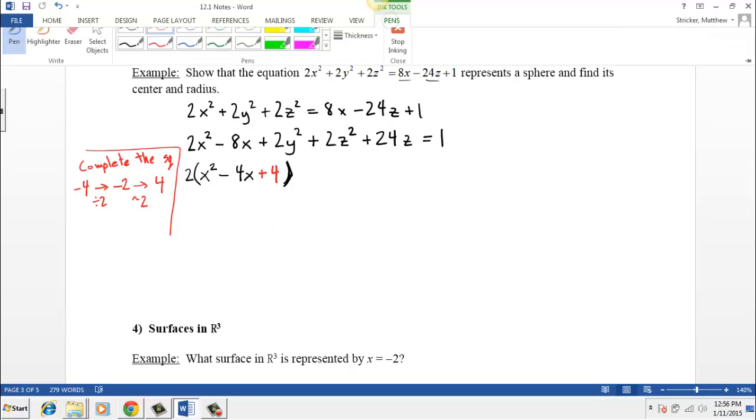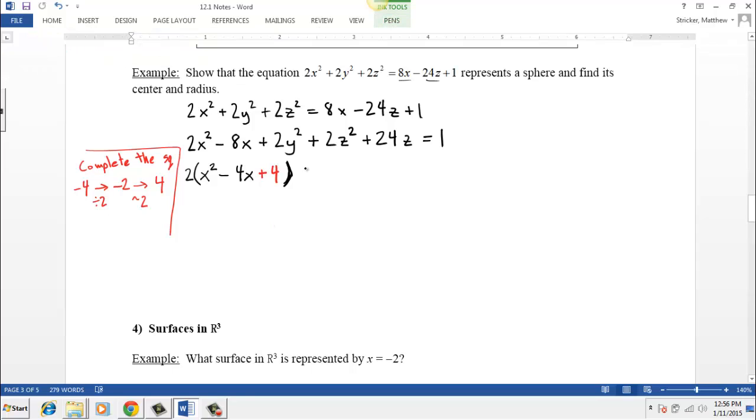Y squared we will not be completing the square on. So let me go ahead and rewrite that, 2y squared. But we also need to complete the square on the z's because we have two terms there. So again, if we pull out a 2, we have plus 2 times the quantity z squared plus 12z plus something. I'm going to leave some space in there.